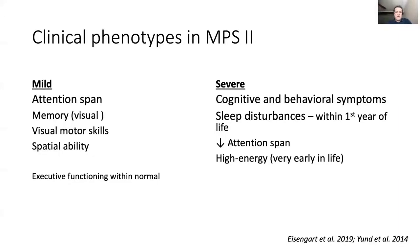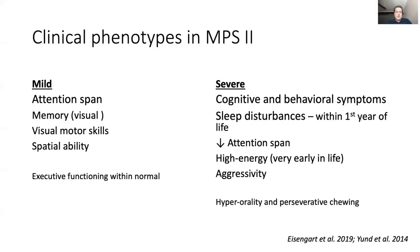The children have low attention span, are high energy, very early in life aggressive to people or objects. That is very challenging and affects quality of life for the child, but also for caregivers and parents. Hyperorality and perseverative chewing are also seen. These are not specific to MPS-2; we also see these in MPS-3A, for example. Seizures can occur later in life.